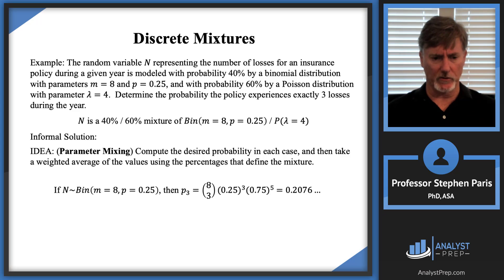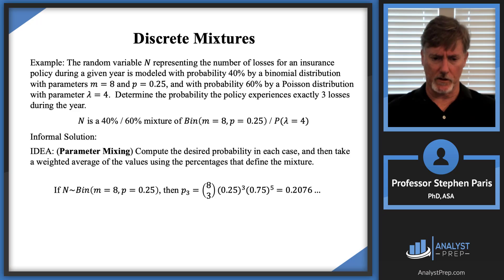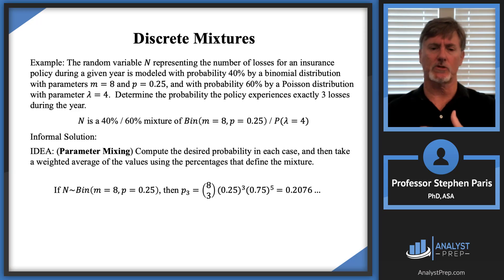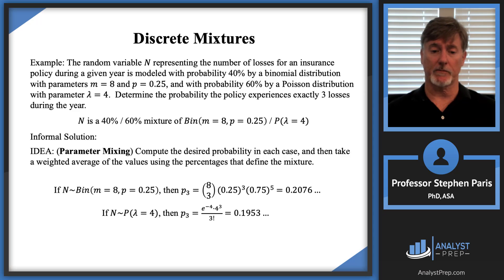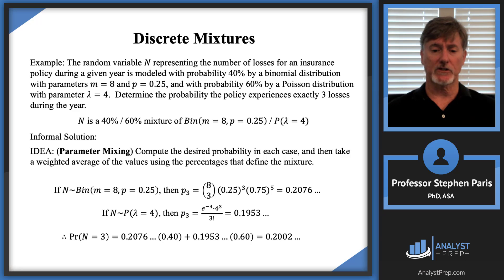If N is binomial, then P(N=3) = C(8,3) × (0.25)^3 × (0.75)^5. That's just how you calculate probabilities with a binomial distribution. On the other hand, if N is Poisson, then P(N=3) = e^(−lambda) × lambda^3 / 3!. Then the total probability P(N=3) is a weighted average of these two values using the 40%-60% mixture.